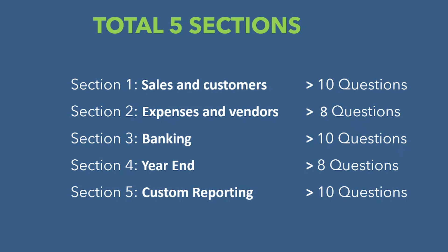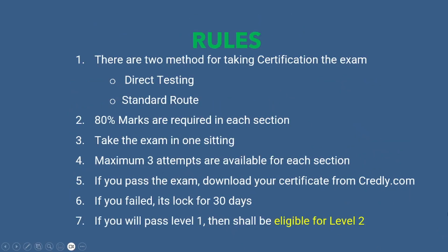Section 5 Customer Reporting has 10 questions. There are some rules for this exam. There are two methods: direct testing and standard rules. You need to get 80 percent marks in each section, and you should take the exam in one sitting. There are maximum three attempts for each section.